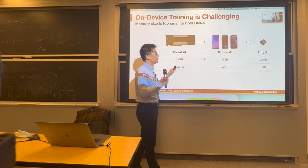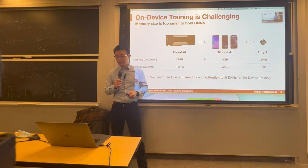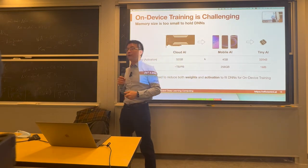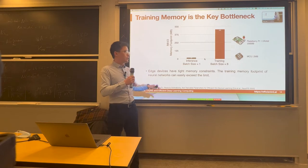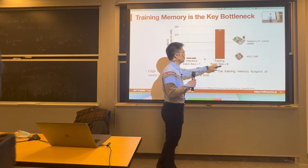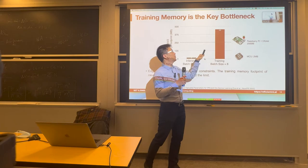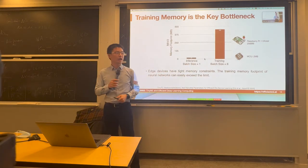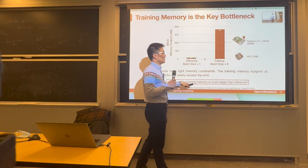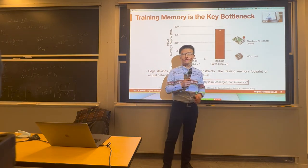We've seen this figure: from mobile devices to tiny devices, the amount of memory resource is four orders of magnitude smaller. We need to reduce both the weights and activations to fit deep neural nets for on-device training. Here is a figure showing the memory footprint required for inference and for training, given the same network — MobileNet V2. There is a huge difference, more than 20x, in the memory requirement. Why is training memory much larger than inference? Inference requires only 20 megabytes, but training requires 450 megabytes.